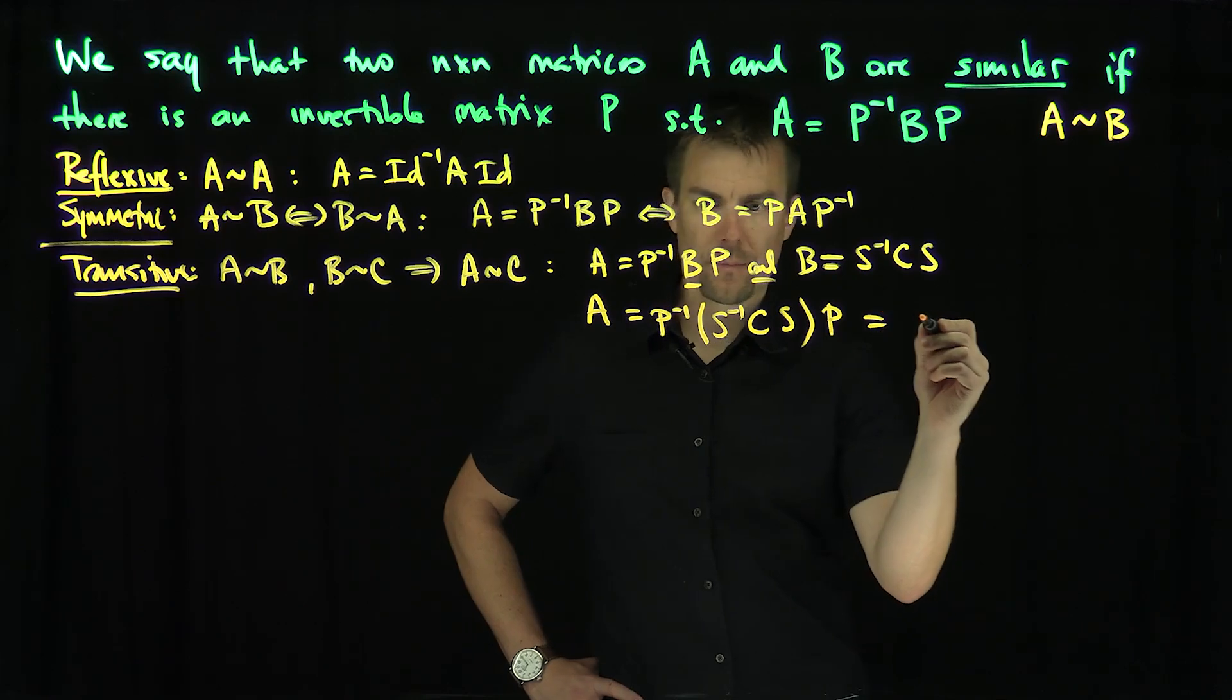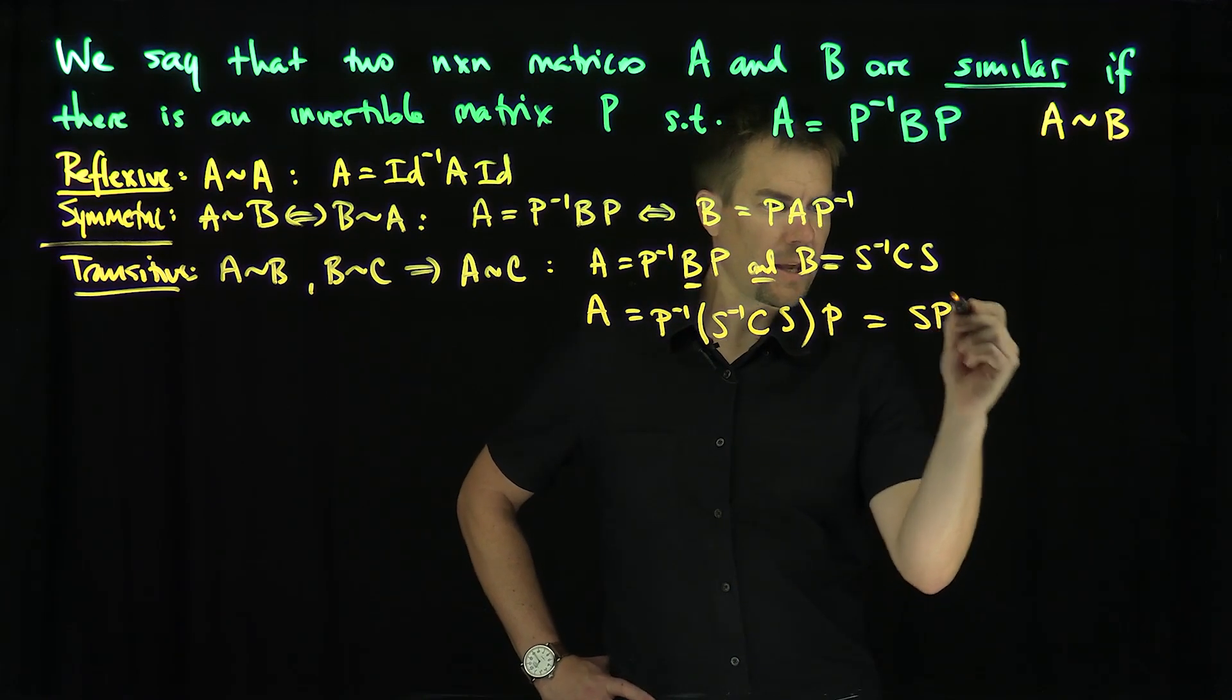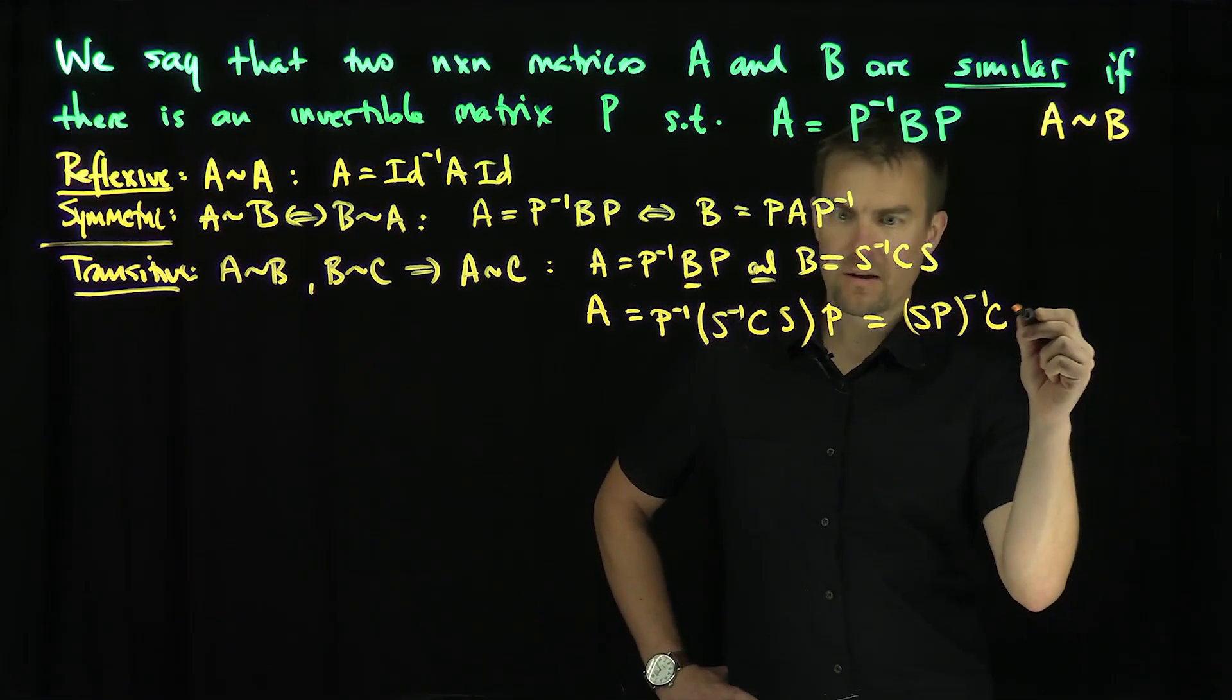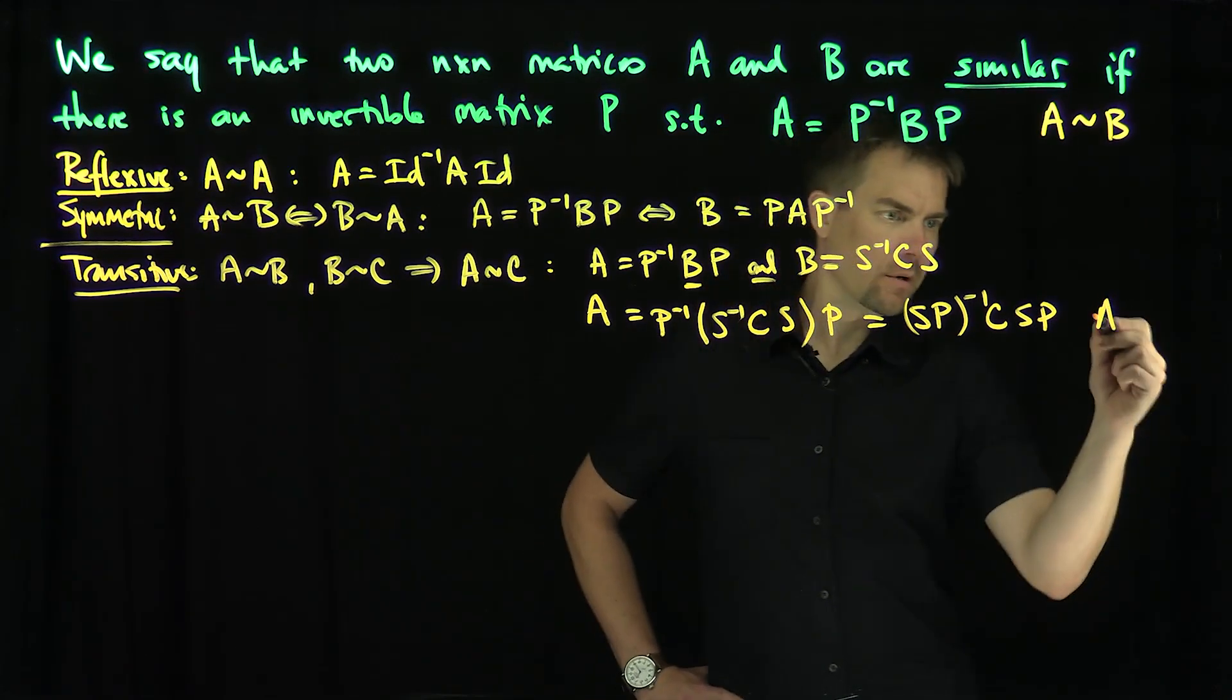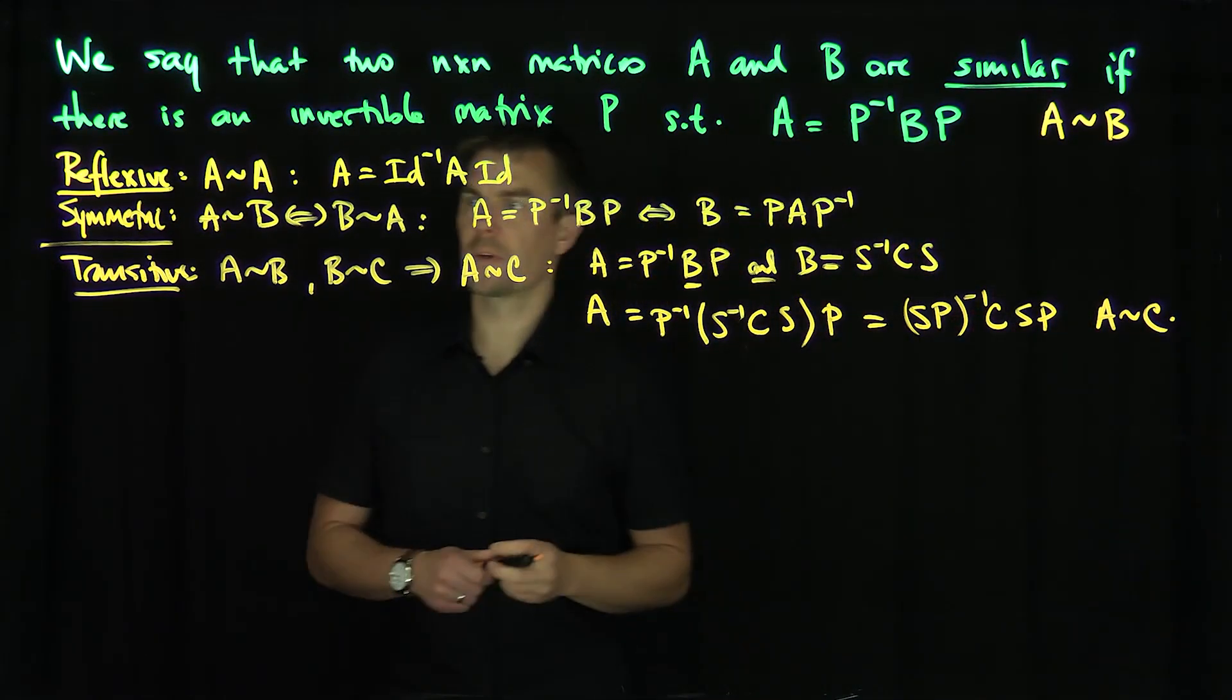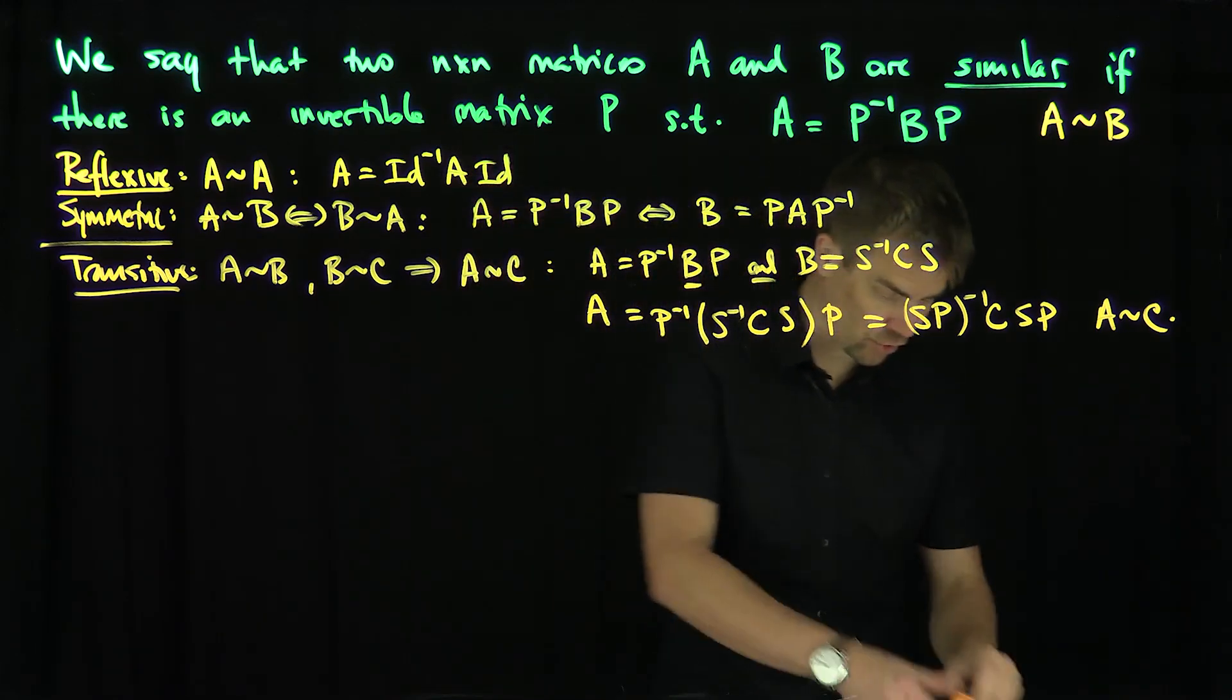And so this equals SP inverse by our rules for inversion, C, SP, and that says that A is similar to C. So it's an equivalence relationship, which is wonderful.